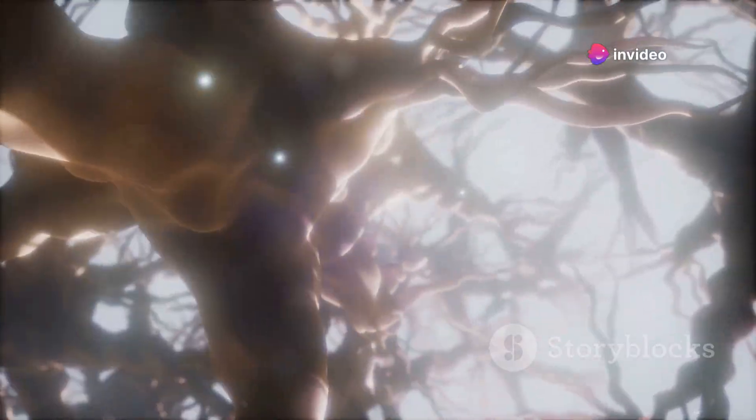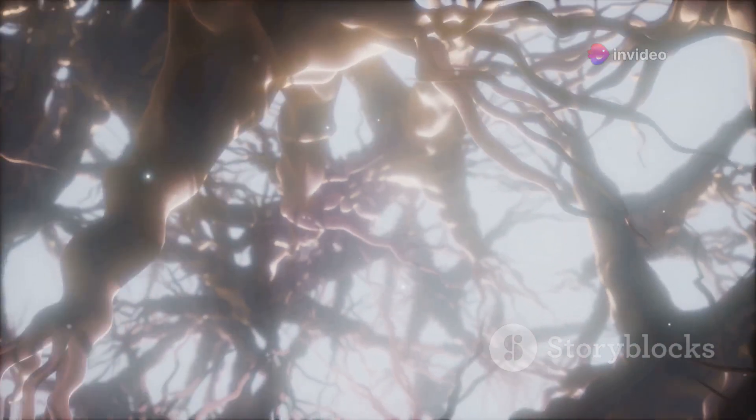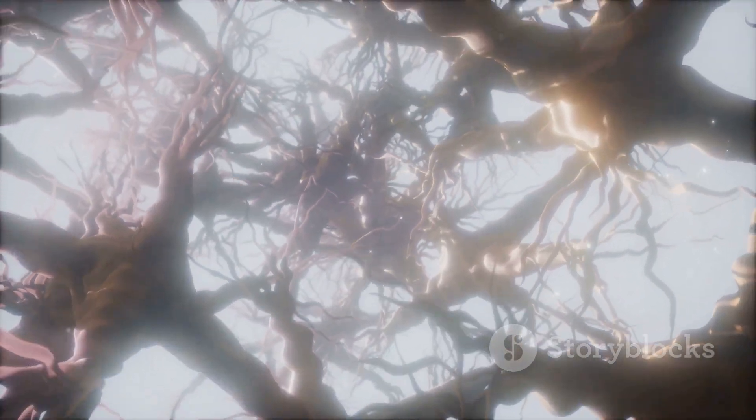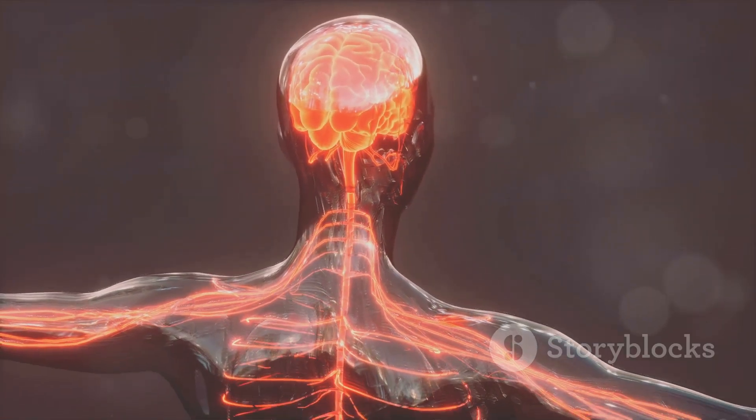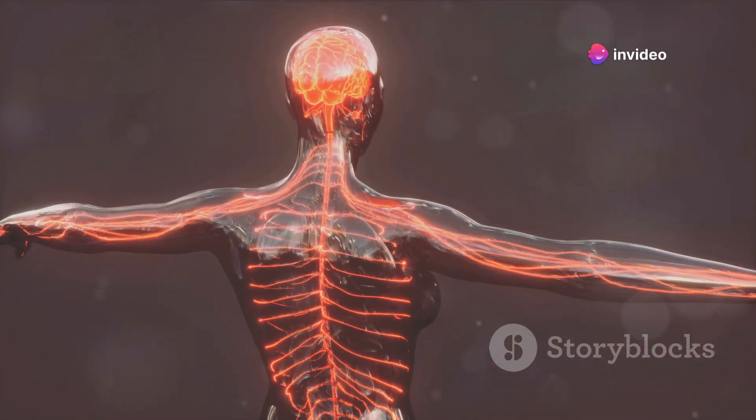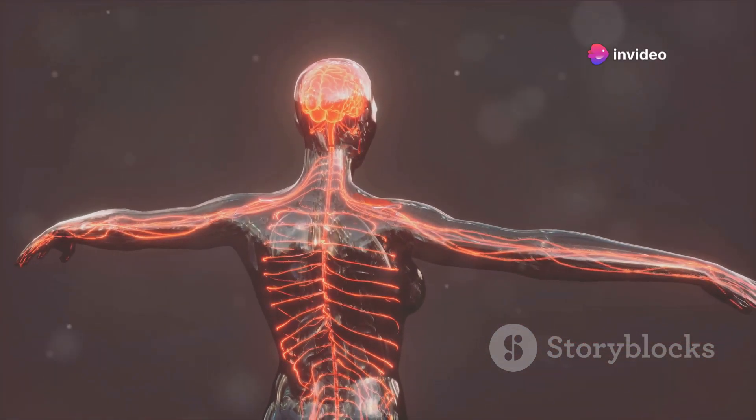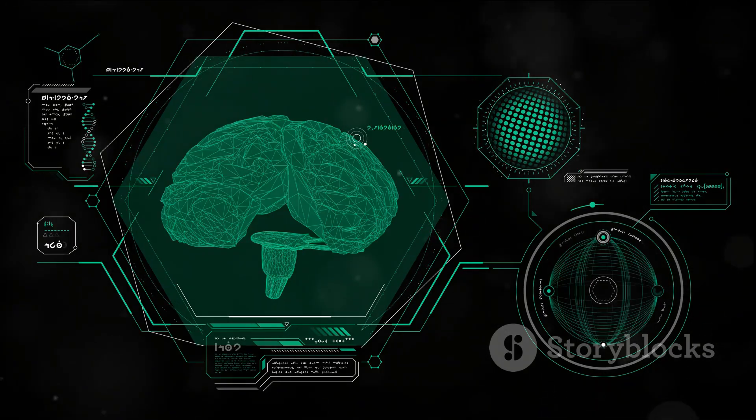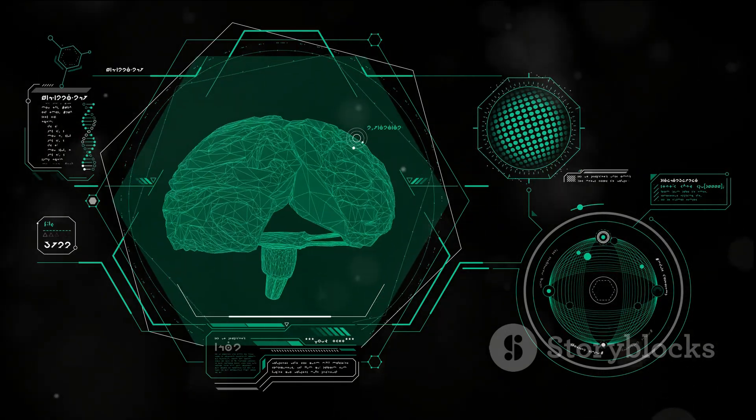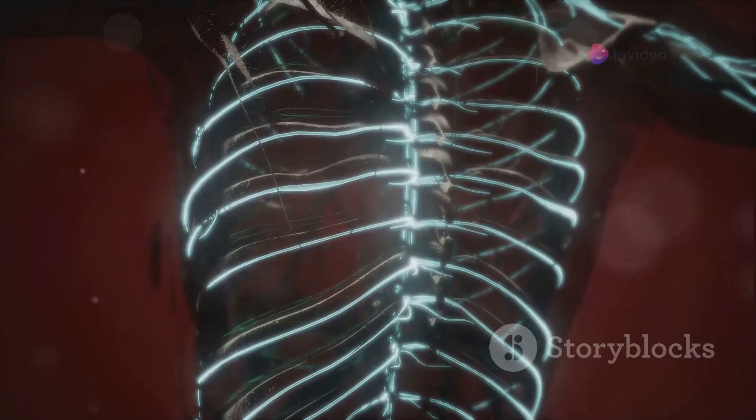But it's not just about churning out thoughts, the brain is also constantly refining its thought production process. This is where the concept of neuroplasticity comes in. Neuroplasticity allows the brain to adjust and adapt, to improve its thought production process based on past experiences and new information. It's the brain's quality control department, ensuring that the thoughts produced are the best possible ones for any given situation.